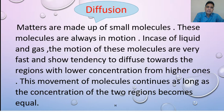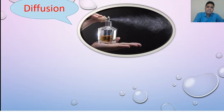Here is an example: if you open a cork of perfume in the corner of your room, you will find that it spreads through the whole room. How is it possible? It is possible due to diffusion.